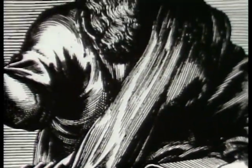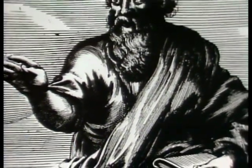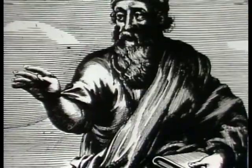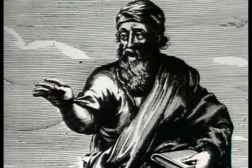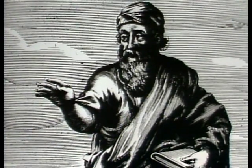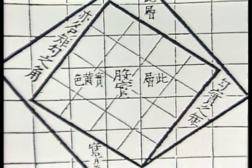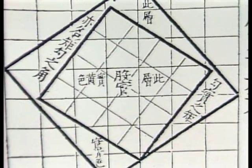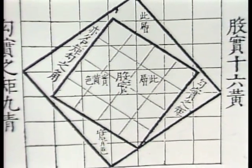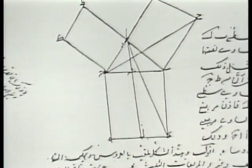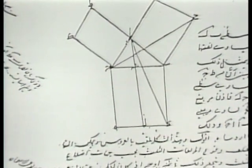The Pythagorean theorem is named in honor of Pythagoras, who lived in ancient Greece in the 6th century B.C. One of the oldest and most important theorems in mathematics, it has been rediscovered again and again in many different cultures.